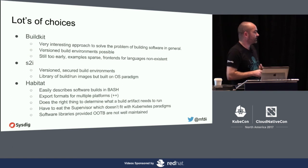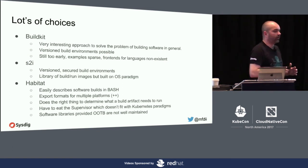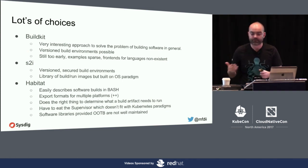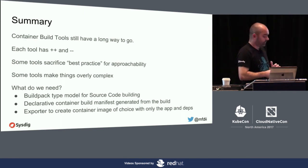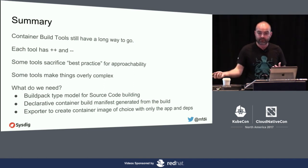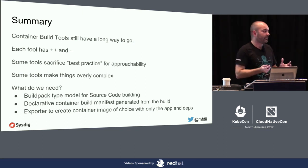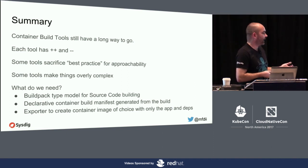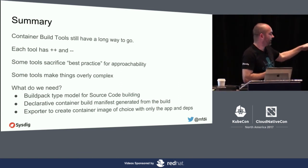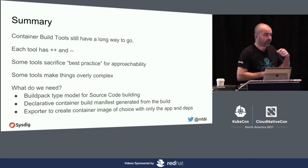Another place to add value to Habitat is that the software libraries provided out of the box are not always well maintained — MongoDB, for example, is about eight releases behind in the minor version and several behind in the major. Container build tools still have a long way to go. Each tool has pluses and minuses, and those minuses are opportunities for the open source community to contribute. Some tools sacrifice best practice for approachability; some make things overly complex. The vision of an ideal container packaging tool: a build-pack type model for source code building, a declarative container build manifest generated from that build, and an exporter to create an image with only the app and the dependencies you need.